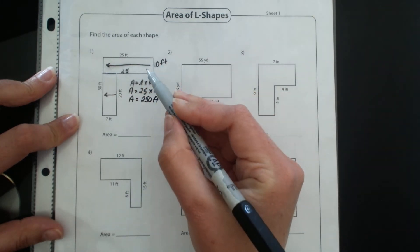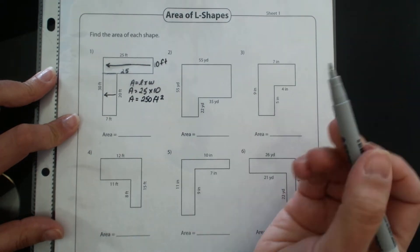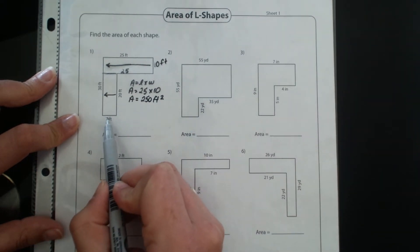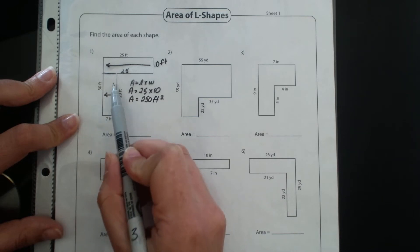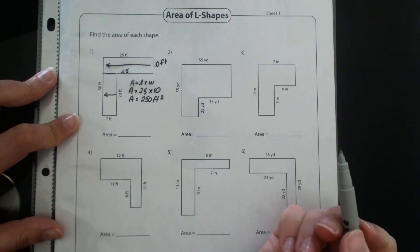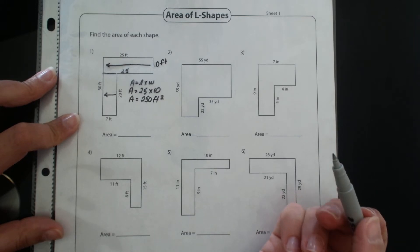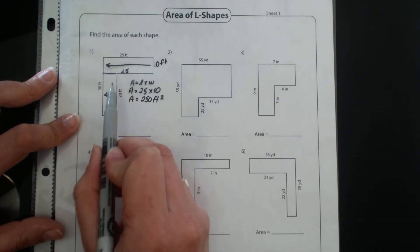And now my top rectangle is done. Now I'm going to work on this bottom one. I notice right away I've got 7 along the bottom and I've got 20 along the side. So I actually don't need to look across to determine any missing sides because I've got my length and my width right there.